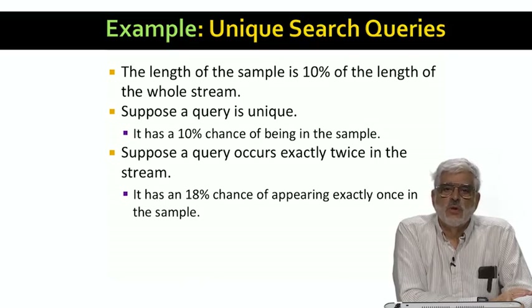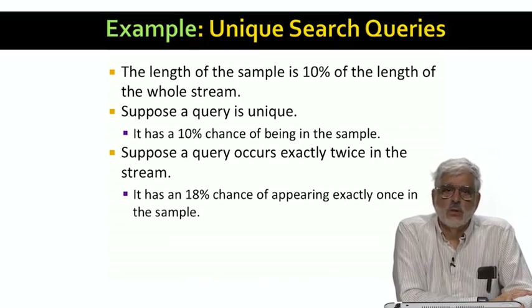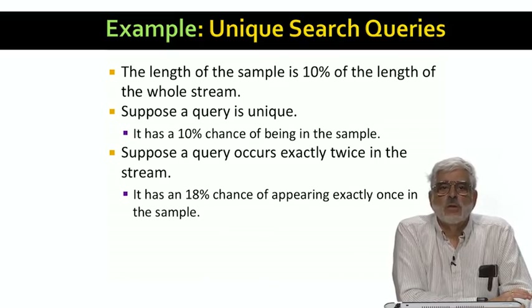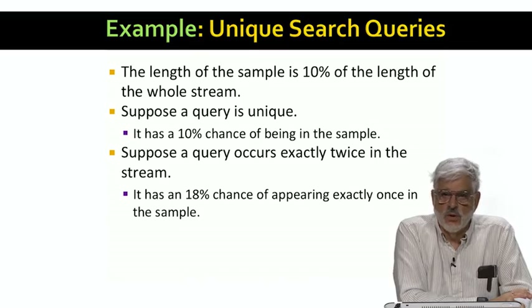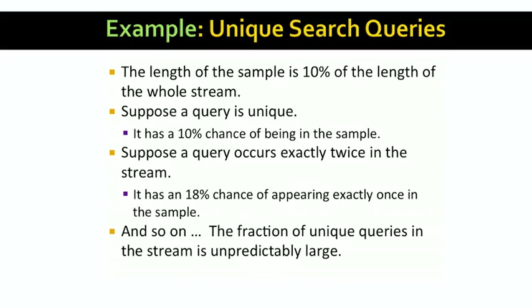However, suppose a search query appears exactly twice in the whole stream. The chance that the first occurrence will be selected for the sample is 10%, and the chance that the second occurrence will not be selected is 90%. Multiply those and we have a 9% chance of this query occurrence being unique in the sample. Moreover, the first occurrence could not be selected but the second is selected — that's another 9% chance of a query that really occurs twice looking unique in the sample. That's a total of 18%. A query that appears three times has a 24.3% chance of looking unique in the sample. And any query, no matter how many times it appears in the original stream, has at least a small chance of looking unique in the sample. So when we count the number of unique queries in the sample, it will be an overestimate of the true fraction — very possibly a substantial overestimate.